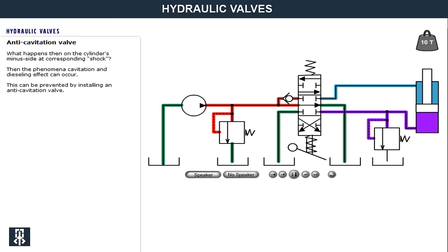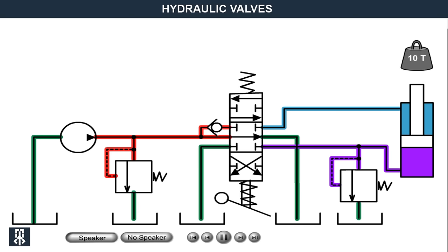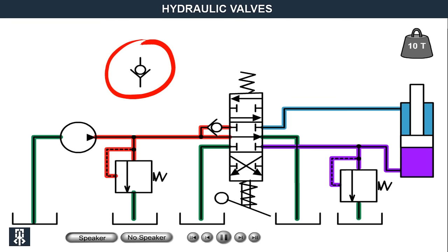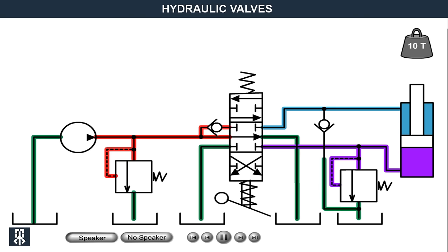When the piston rod moves downward and the volume on the minor side increases, the pressure will drop on that side as the oil volume there is trapped. The phenomena of cavitation and dieseling effect can then occur. Cavitation or dieseling effect can be prevented by installing a non-return valve — called an anti-cavitation valve — between the cylinder's minor side and the tank. When it opens, oil is pressed into the cylinder's minor side if a vacuum is created there.